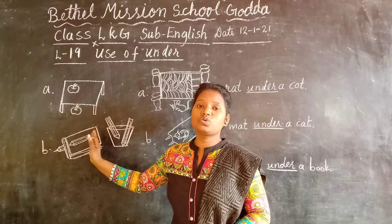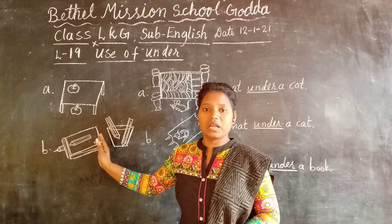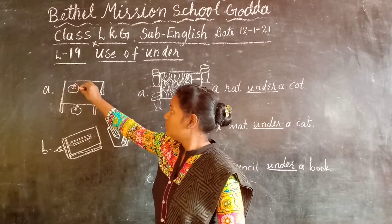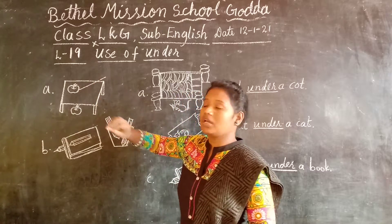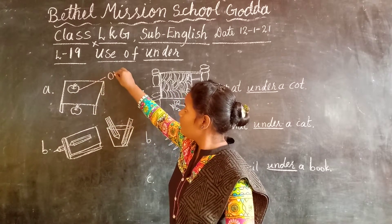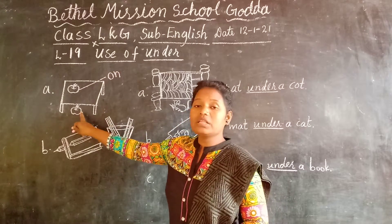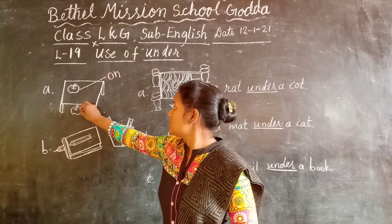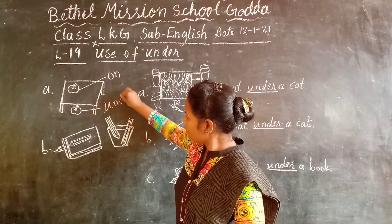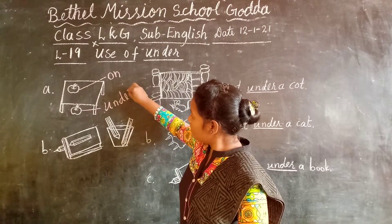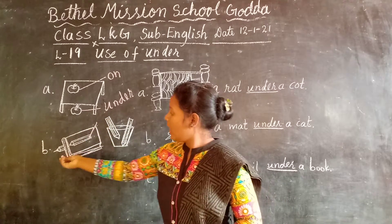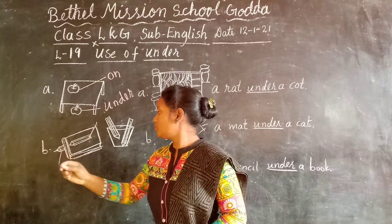On wala hai jo kisike niche hai — on pata na. So in the first picture, if you say how will you say — this is on. On means upar. And this is under the table, so this is under. See in the pictures you can understand. And this is on the book, and this is under the book.